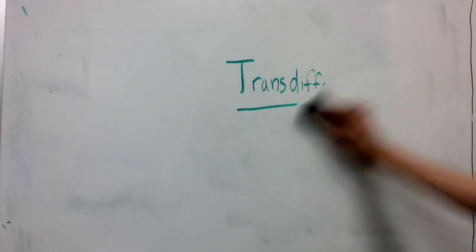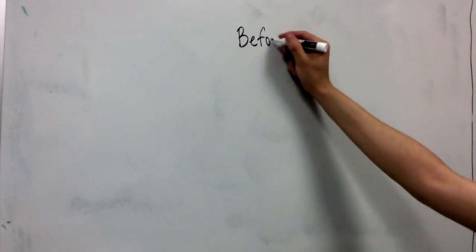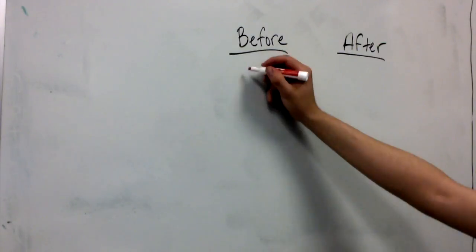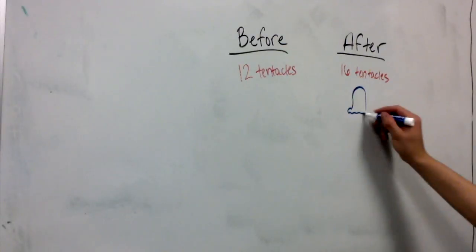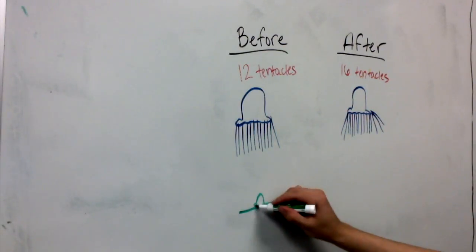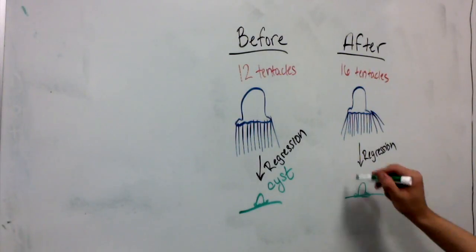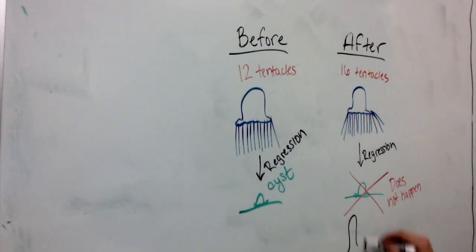In terms of their sexual maturity, we see different patterns of regression. Before sexual maturity, they have 12 tentacles, and after they have 16. If they are pre-sexually mature, they undergo a cyst phase during their regression before reaching the polyp stage. And after sexual maturity, they just go straight to the polyp phase.